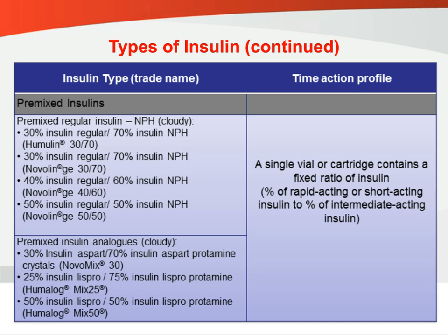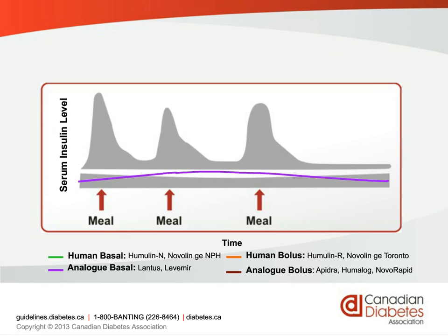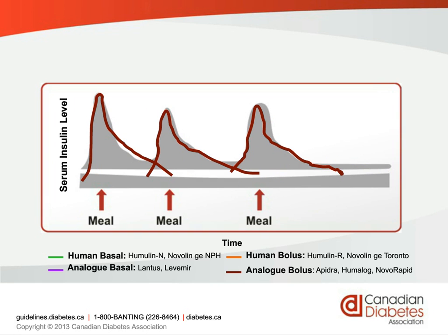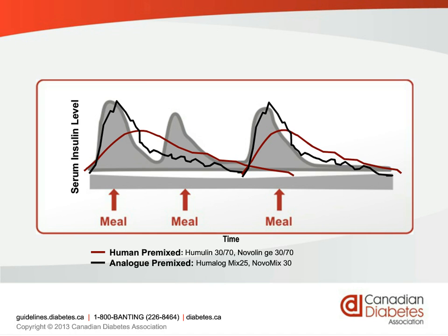Looking at the action profiles: NPH has a greater risk of causing low blood sugars because it peaks higher than natural secretion. Levemir and Lantus are closer to flat. Regular insulin doesn't match normal physiology as closely and has greater hypoglycemia risk compared to the rapid-acting analogs — Humalog, NovoRapid, and Apidra — which more closely match natural secretion and control after-meal blood sugar much better. The older R and N premixed insulins have large gaps where blood sugar is not covered, representing greater hypoglycemia risk. The newer analog premixes have less chance of hypoglycemia and better insulin control.